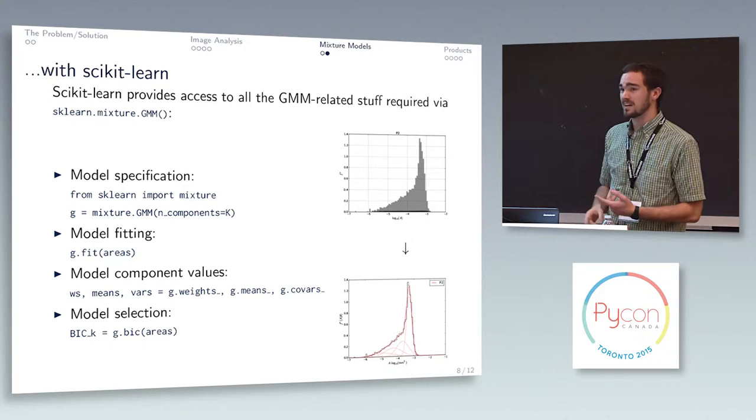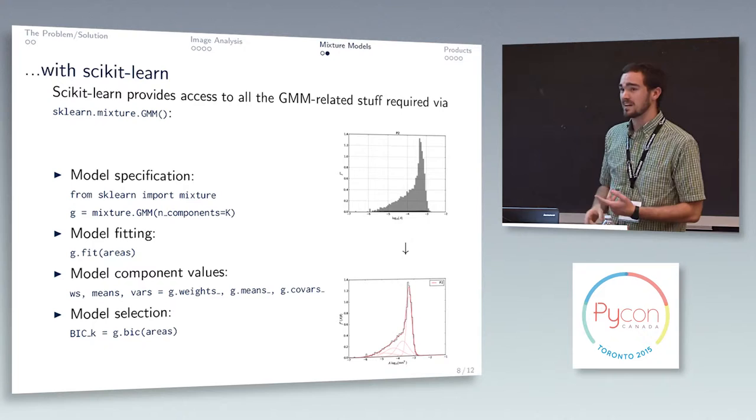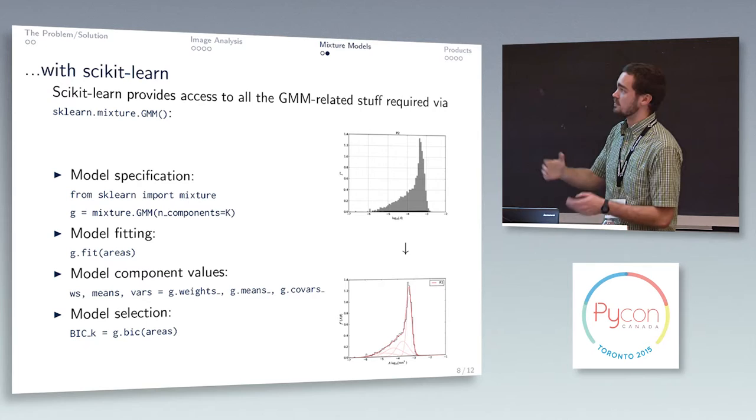And then you can get information about your model, so you can access different weights, means of those distributions, even some statistical model comparison stuff, that BIC at the bottom is all really readily available to you through scikit-learn.